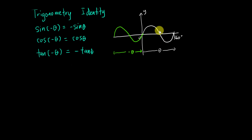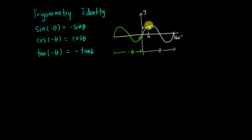For example, if I take 40 degrees on the positive side, you can see I get a positive value. Sine 40 is something like 0.64. And if I go to the negative side, we call that negative 40.